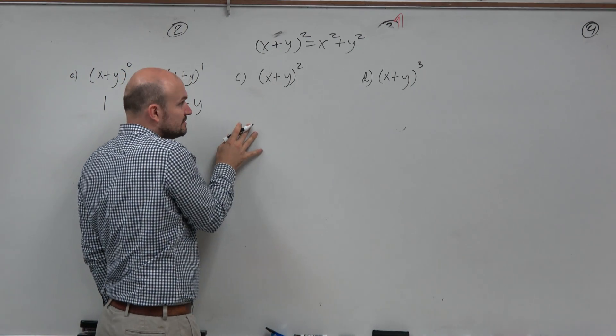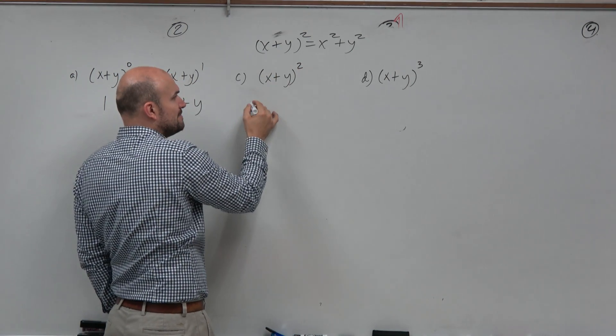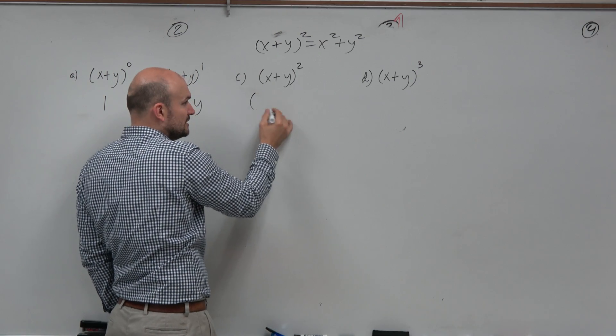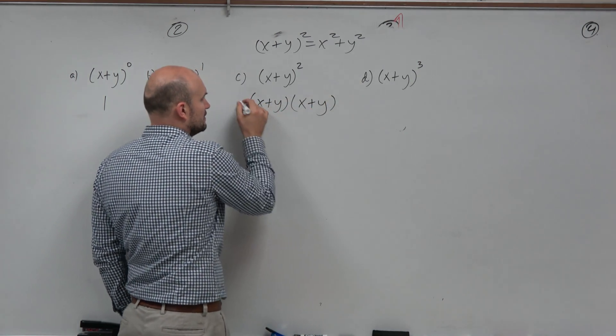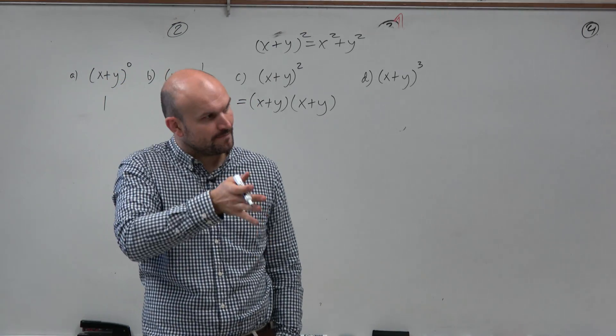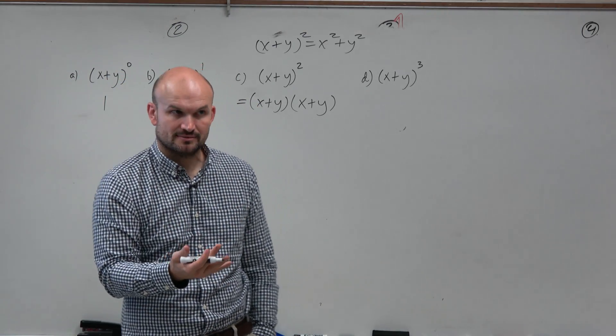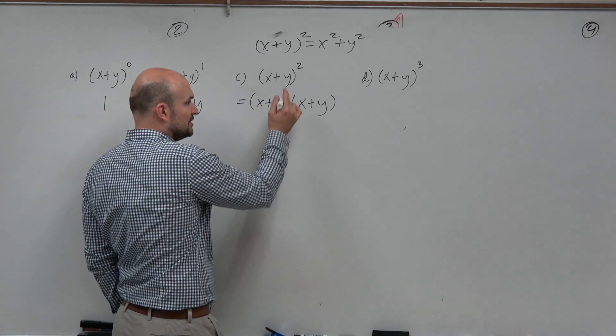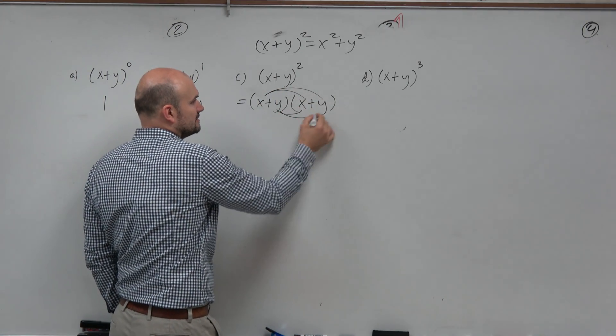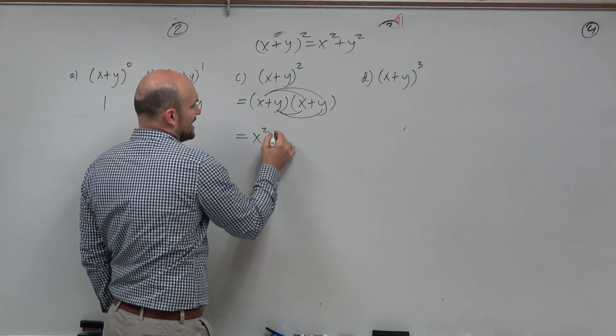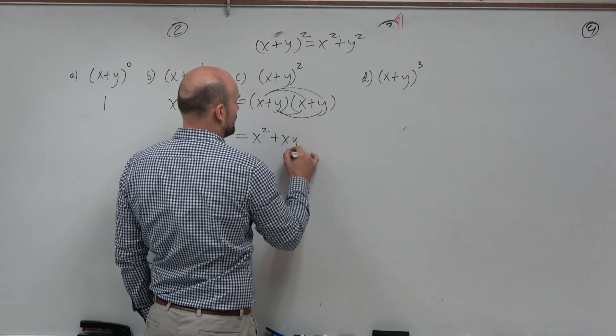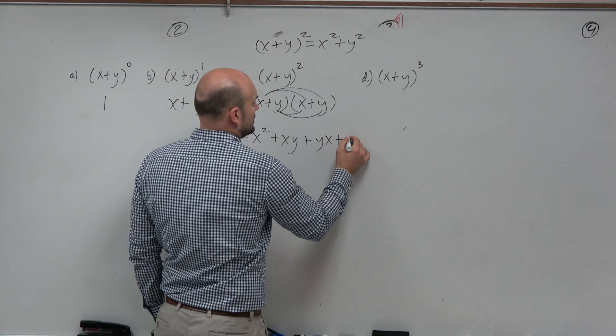Remember, guys, when you have that exponent 2, that means repeated multiplication. That's x plus y times x plus y. 4 squared is 4 times 4, right? It's repeated multiplication. And then here, you recognize you need to apply distributed property. So you could use FOIL or whatever way you want to. x squared plus xy plus yx plus y squared.